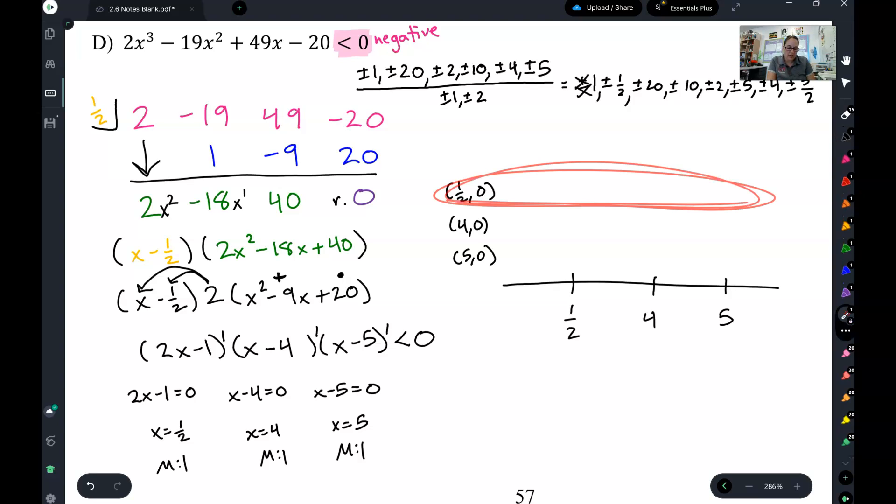So this number line is for 1 half. So I'm going to put the 0 at 1 half. Left is negative, right is positive. Then this number line is at 4. So I'm going to put the 0 here at 4. Left is negative, right is positive. This number line is at 5. So I'm going to put the 0 there at 5. Left is negative, right is positive.